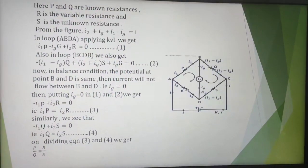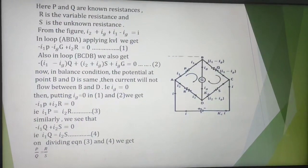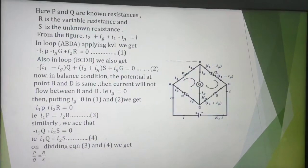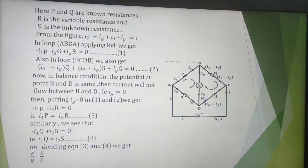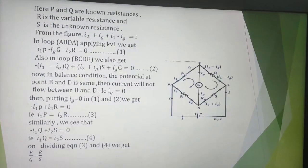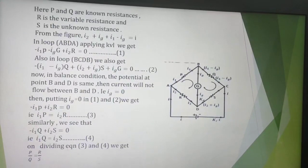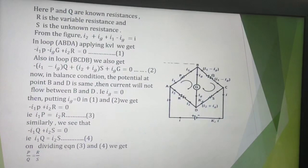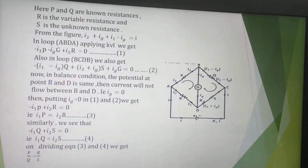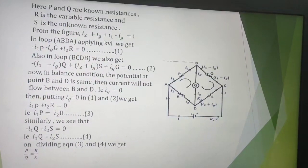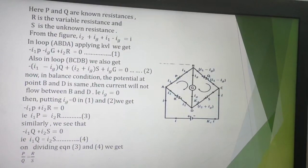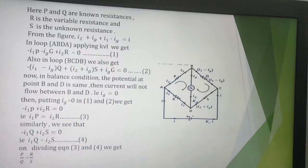Now when the current switch is on, the total current delivered by the battery be I. Now at junction A, the current I will be divided into two parts, I1 and I2. I1 passes through P and I2 passes through R. At junction B, the current I1 is again divided into two parts. Some part of it will flow through Q and the other part will flow through the galvanometer G.